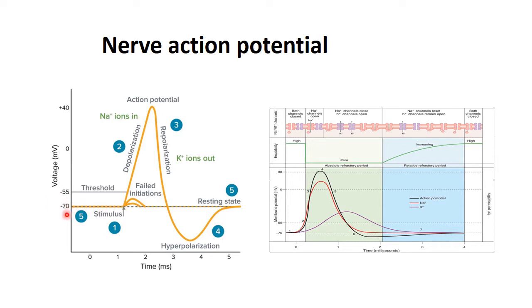In nerve action potential, the resting membrane potential is at minus 70 millivolts. Depolarization starts at around minus 55 millivolts, and the spike starts from that point. There are two key ions: sodium ions, which go in, and potassium ions, which go out. The resting membrane is more permeable to potassium; the depolarization phase is permeable to sodium; and the repolarization phase is again permeable to potassium.